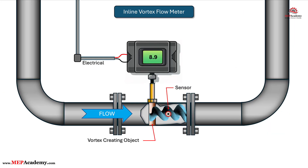The inline vortex flow meter works by placing an object in the flow path that creates vortices which can be measured by the meter, producing a frequency that is proportional to the flow rate. Sensors located along the shed vortex measure the pressure changes, and the frequency at which each vortex is shed is directly proportional to the velocity of the flowing liquid. There is also the option to provide insertion-type vortex flow meters. The flow meter has a moderate pressure drop due to the bluff body obstructing the flow, but this is usually acceptable in most applications.